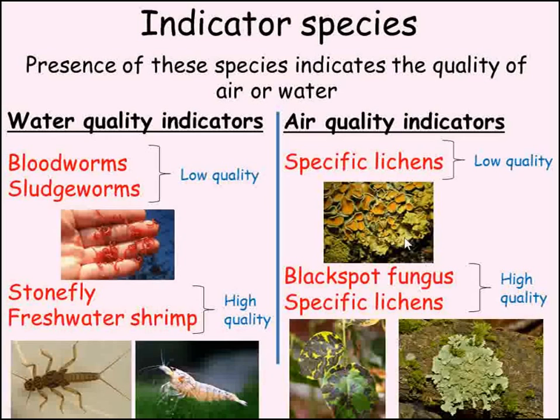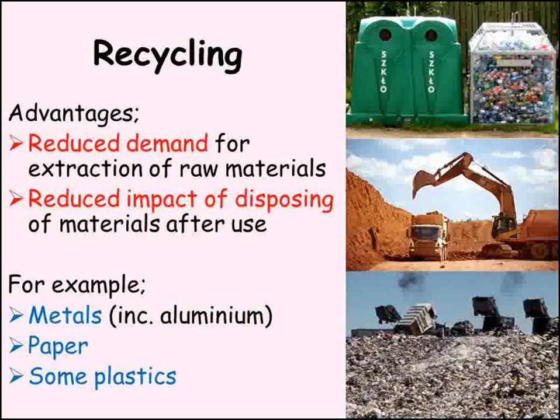One thing people can do to reduce some of the pressure placed on the environment by our growing population is to recycle. This reduces the demand for the resource in question, for example aluminium. By recycling an aluminium can, less of the metal needs to be quarried and then extracted from its ore. It also reduces the amount of waste needing to be disposed of. Other materials that can be recycled with the same benefits are paper and some plastics.